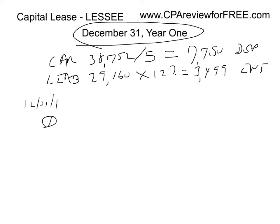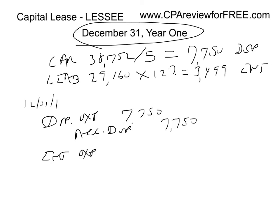First, record depreciation on the leased car — it's a capital lease, so: debit Depreciation Expense $7,750 and credit Accumulated Depreciation $7,750. Then record interest: debit Interest Expense $3,499 and credit Lease Liability $3,499. That process can earn you points on the CPA exam.